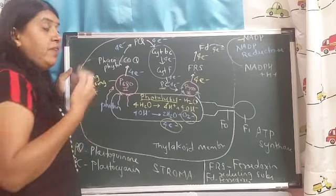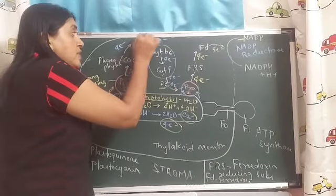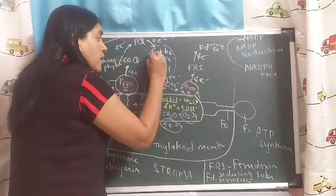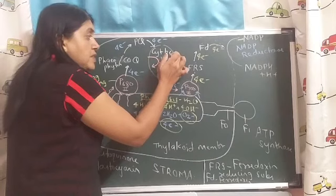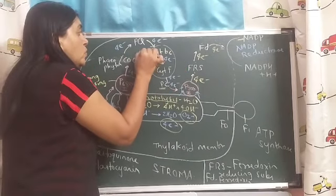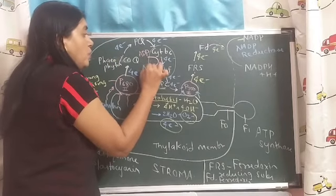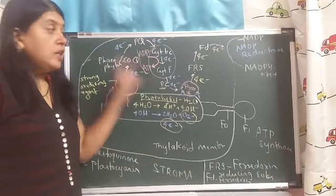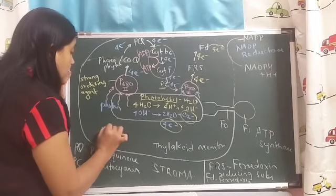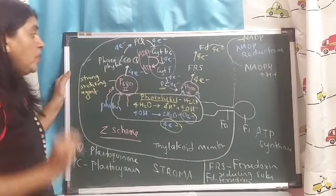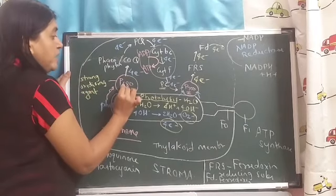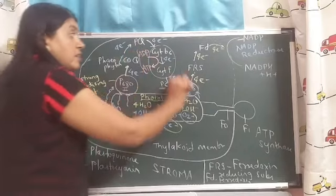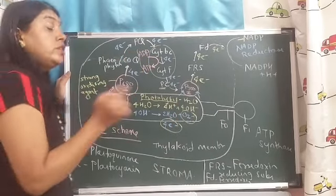When the electrons are flowing through these chain of carriers, energy is released — for example, from cytochrome B6 to cytochrome F — and ADP forms ATP. So energy is generated in non-cyclic photophosphorylation. This scheme is also called the Z scheme because the electron carriers are arranged in the shape of a Z.